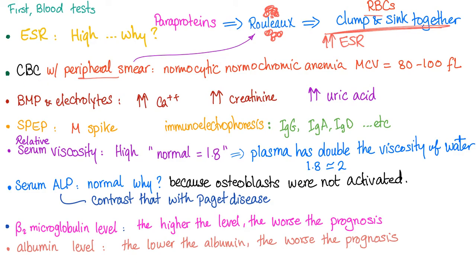On CBC, we have normocytic normochromic anemia — MCV is normal, red blood cell count is low. CMP and electrolytes show high calcium, high creatinine, and high uric acid: high calcium because of bone destruction, high creatinine because of renal failure. On serum protein electrophoresis we see the M spike; immunoelectrophoresis tells us the subtype — usually IgG.